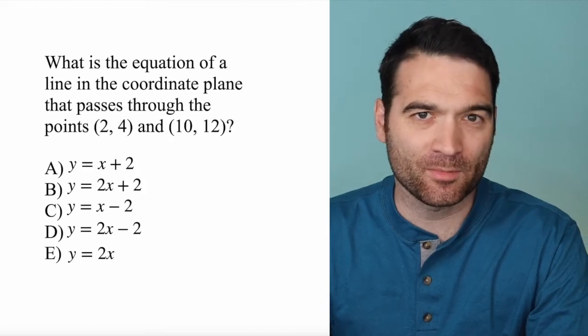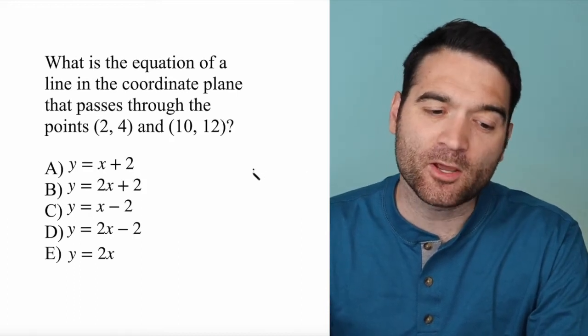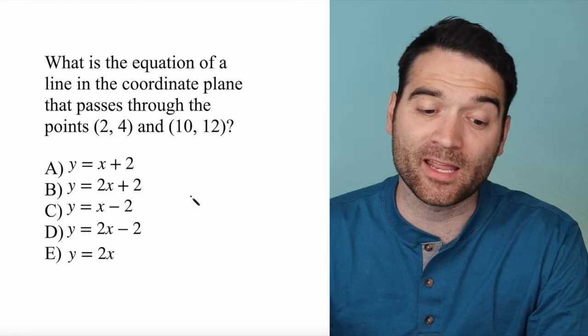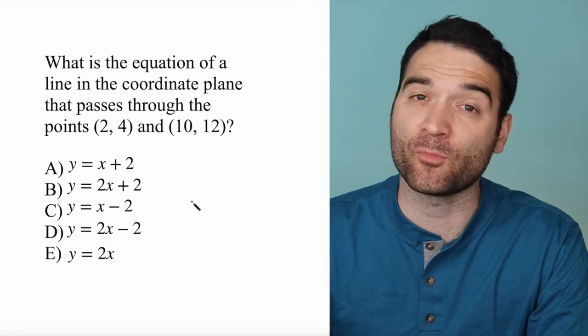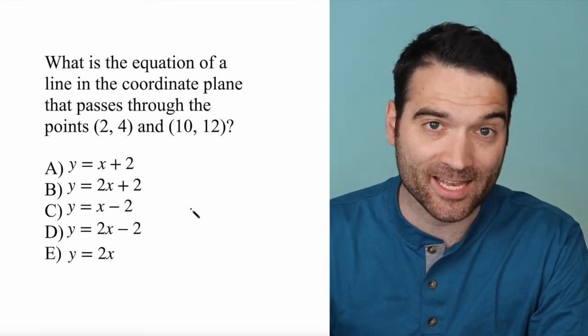Here's a fun GRE problem. What is the equation of a line in the coordinate plane that passes through the points (2, 4) and (10, 12)?